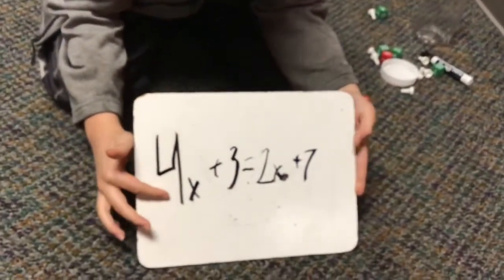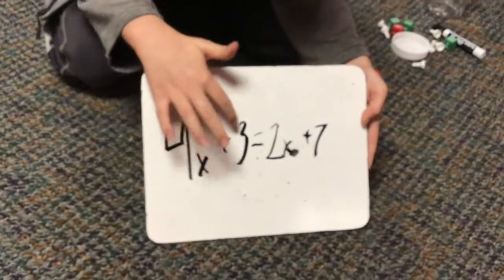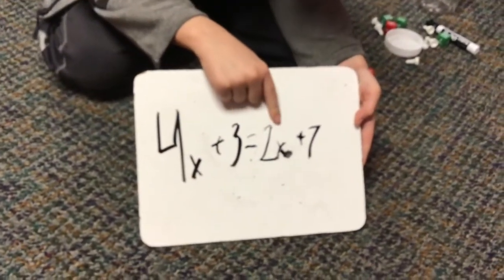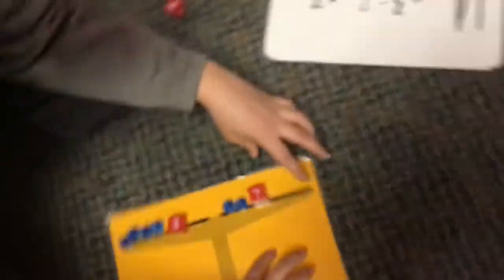This is the first problem. 4X plus 3 equals 2X plus 7. Here we have our problem.